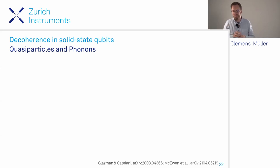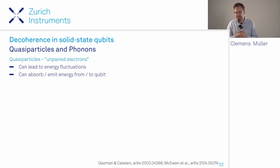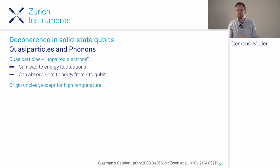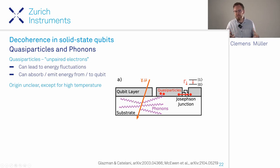Quasiparticles—unpaired electrons in a superconductor formed by breaking Cooper pairs—can lead to both energy fluctuations and energy absorption from the qubit, causing dephasing and relaxation. Their origin at operating temperatures is not fully understood, but one mechanism involves cosmic ray absorption by the substrate, generating high-energy phonons that break Cooper pairs into quasiparticles.